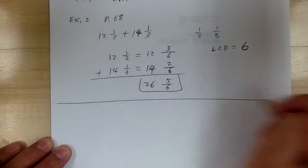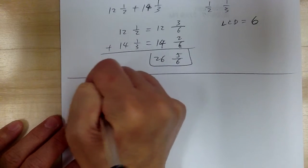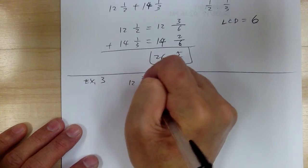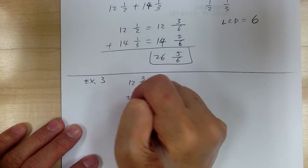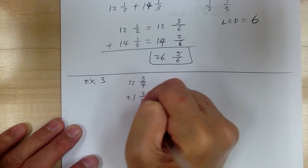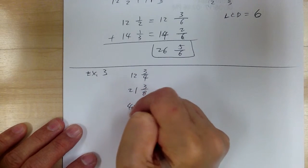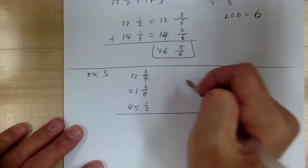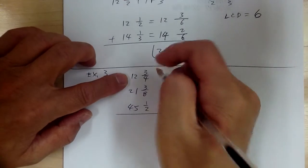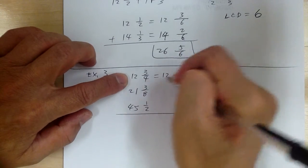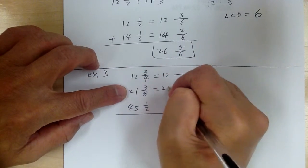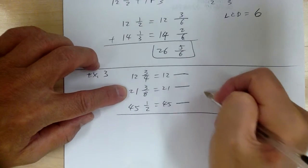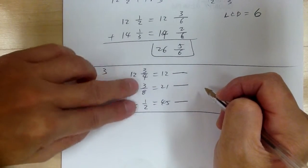Let's go to example 3. You're adding 12 and 3 fourths, then you have 21 and 3 eighths, and you have 45 and 1 half. First, you need to convert into the common denominator. So this is 12 and something, 21 and something, 45 and something. You have to get your common denominator.